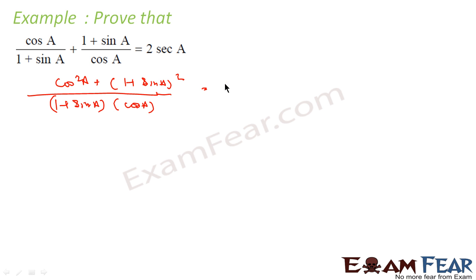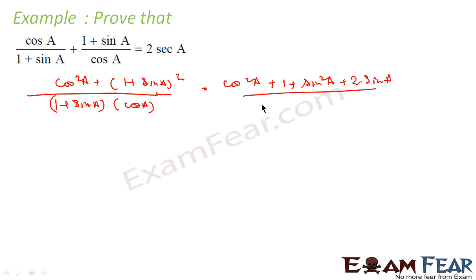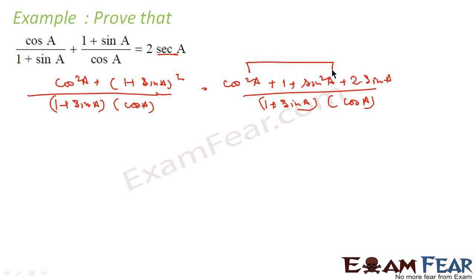Let's expand the numerator: cos²A + (1 + sin A)² = cos²A + 1 + sin²A + 2 sin A. The denominator is (1 + sin A)·cos A. Now, cos²A + sin²A = 1, so 1 + 1 = 2, giving us 2 + 2 sin A in the numerator.